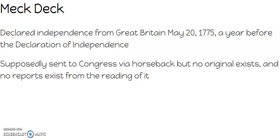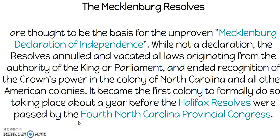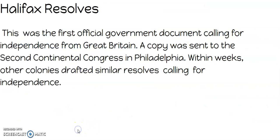The Mecklenburg Declaration — we've already kind of talked about it. It's a Declaration of Independence supposedly dated May 20th, 1775, and supposedly sent to Congress, but no original exists and no reports exist from the reading of it. The Mecklenburg Resolves are thought to be the basis for the unproven Mecklenburg Declaration. While not a declaration, the resolves annulled and vacated all laws and declared independence from England, and they were the first of many, as other colonies would follow.